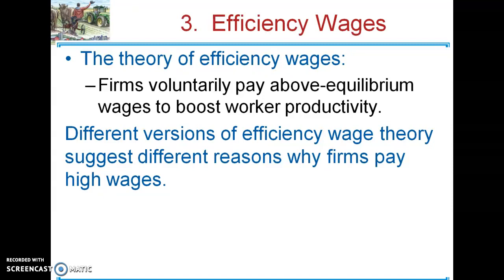A classic example of efficiency wages is Henry Ford. Over a hundred years ago, the going rate was about $2.50 per day. Ford had a serious turnover problem — workers would leave, requiring costly retraining. He decided to pay $5 a day, doubling the typical auto worker's wage. His turnover problem went away, he got more efficient workers, and his profits actually increased. But so many people wanted to work for Ford that he could never hire all of them, leaving some of those workers unemployed.